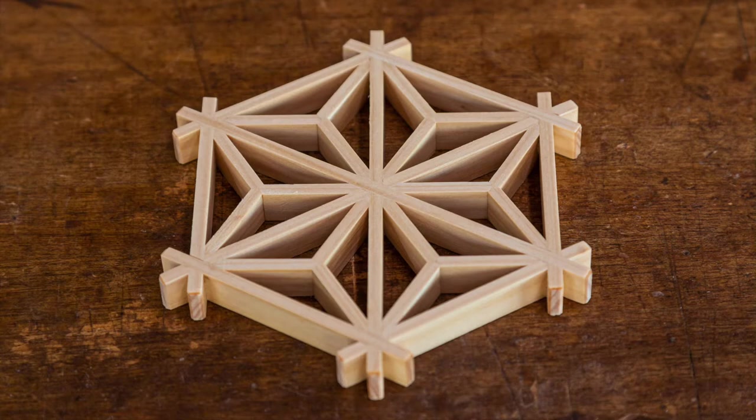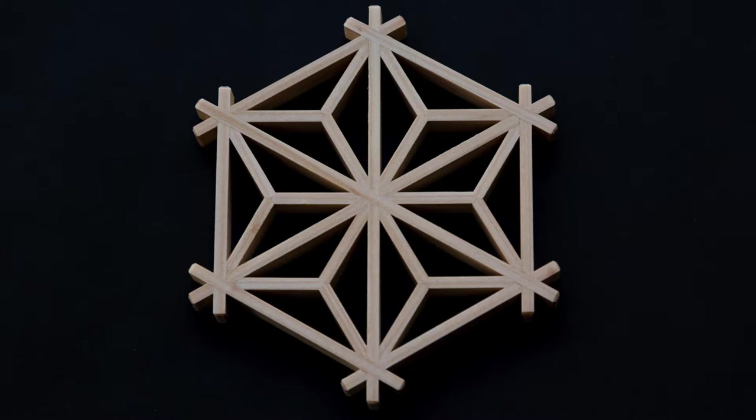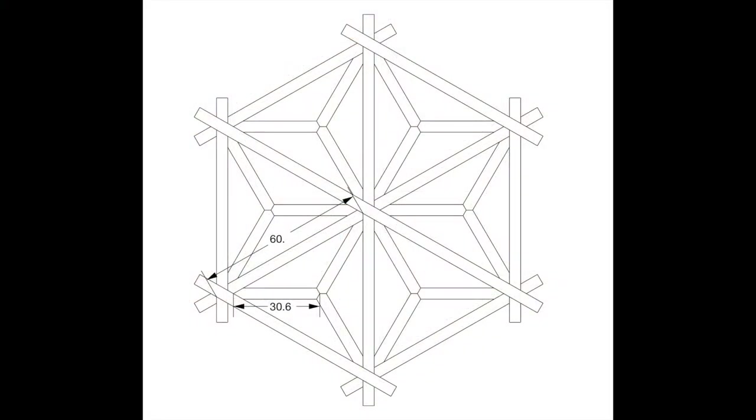Greetings. This is the piece I'll be making in this video: a hexagonal Asanoha coaster. As you can see by the dimensional diagram, the pitch of the Kumiko is 60mm, and all Kumiko, including the Asanoha pattern pieces, have a mitsuke of 4mm.